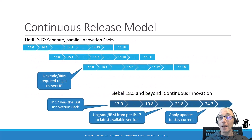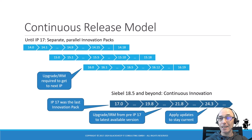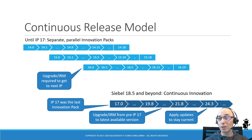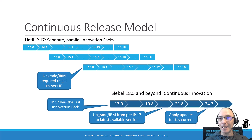Oracle introduced the continuous release model with Siebel 18. The last innovation pack you can ever upgrade to was IP 17, and upgrading means a lot of effort when you go from IP 14, 15, or 16. You should upgrade to the latest Siebel release, which at the time of recording is Siebel 24.